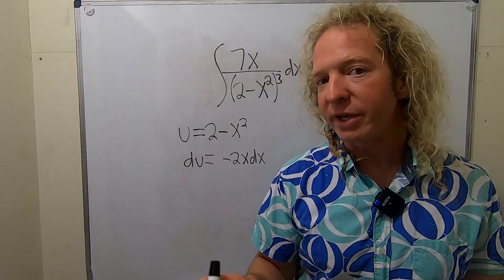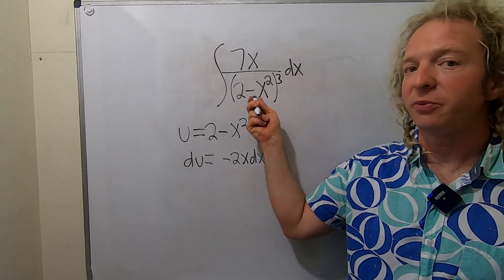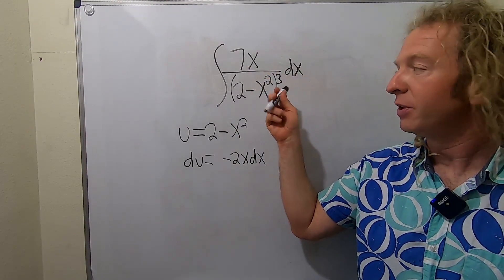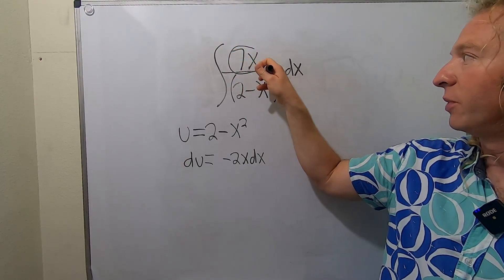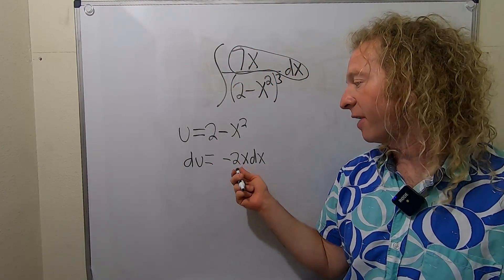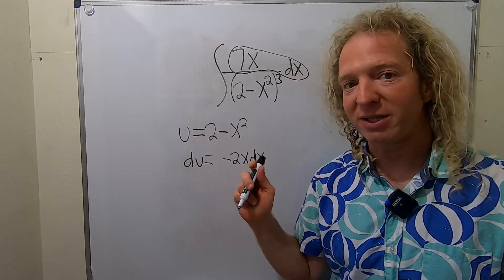Now we've taken care of this piece here. We know that's u, so we have to make this look like what's in our integrand. You'll notice in our integral we have 7x dx. Here we have negative 2x dx.